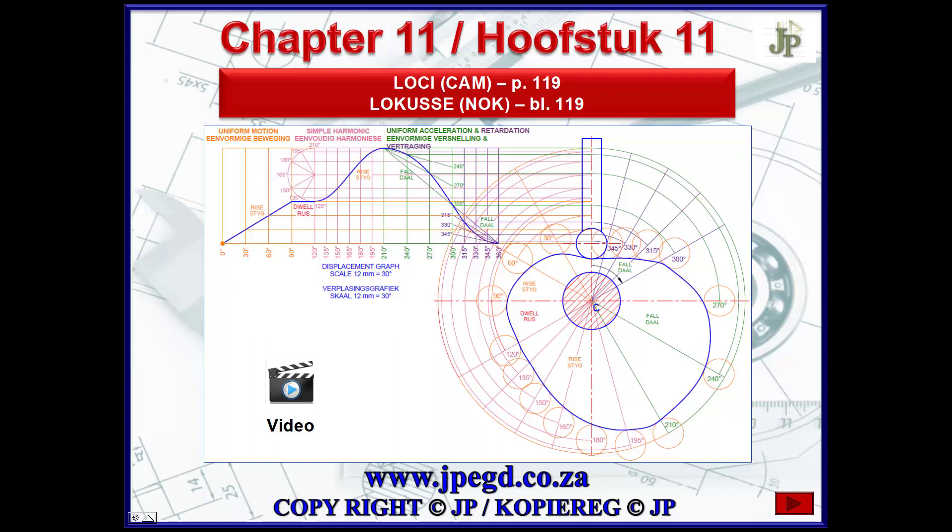Let's take a look at the CAM of page 119 in the JPEGD workbook. Here we have a uniform motion, a simple harmonic, and a uniform acceleration and retardation example all in one. The displacement graph is provided in the question, and you need to do the construction of the CAM disk profile. This particular example has a roller ended follower.